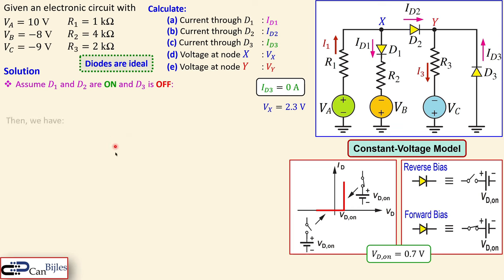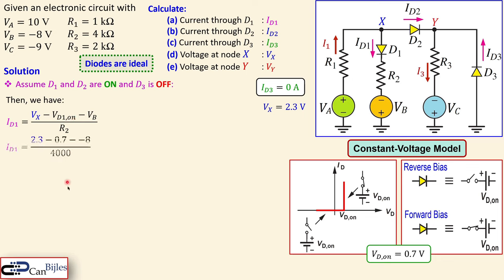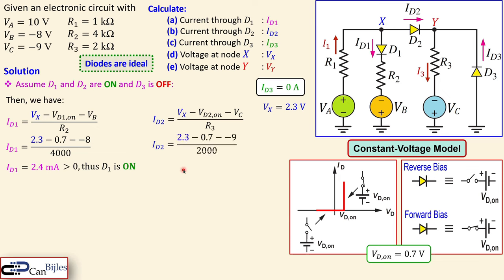Using VX equals 2.3 volts, we calculate ID1 from the branch equation: substituting VX, VD1_on, VB, and R2 gives ID1 equals 2.4 milliamps. Since this is greater than zero, D1 is ON and that assumption is correct. Similarly for ID2, setting up the full branch from node X to ground gives ID2 equals 5.3 milliamps, which is also greater than zero, confirming D2 is ON.